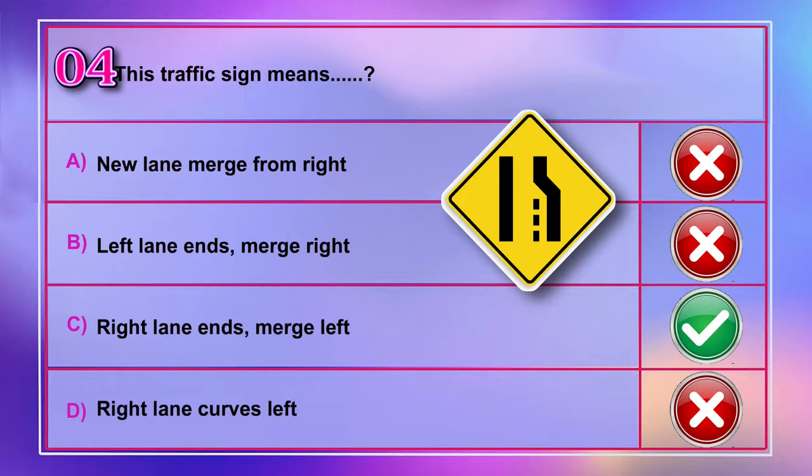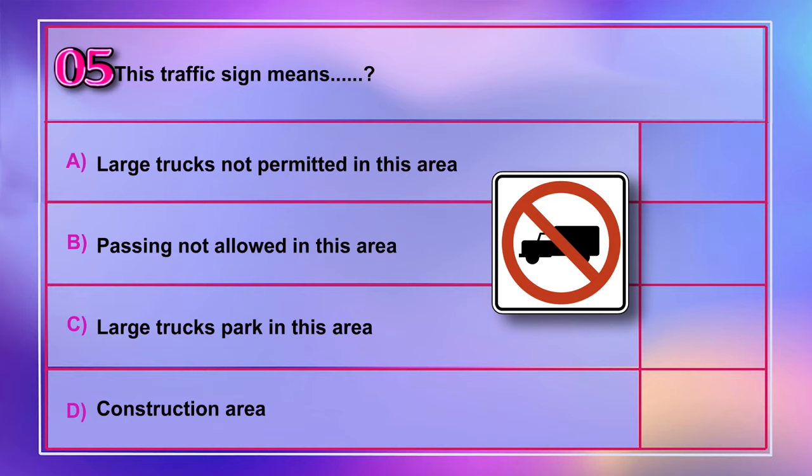Question number 5: This traffic sign means A) large trucks not permitted in this area, B) passing not allowed in this area, C) large trucks park in this area, D) construction area.